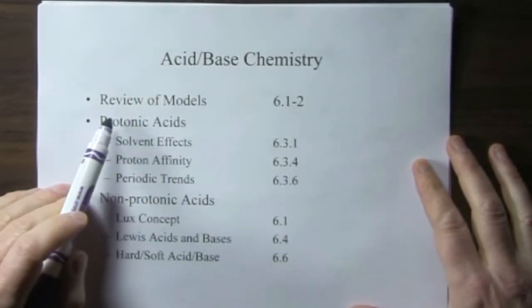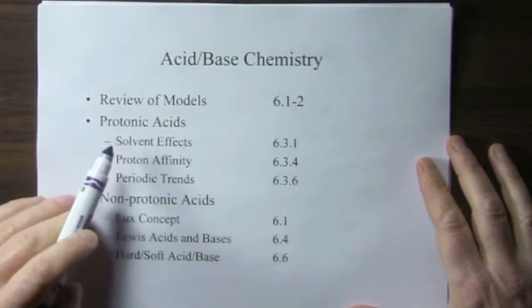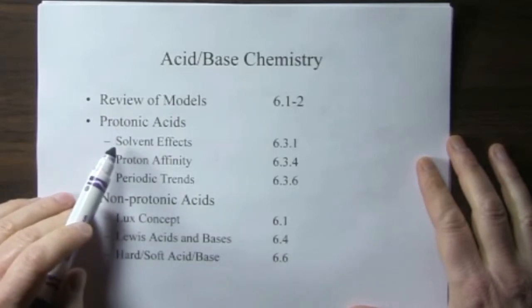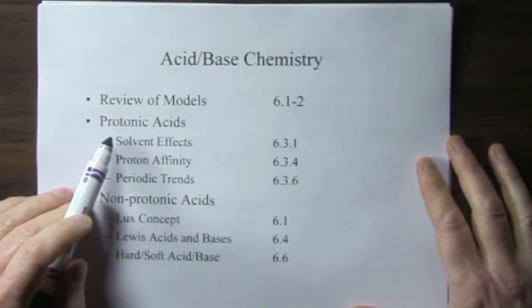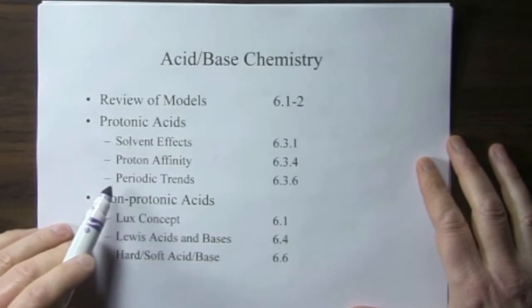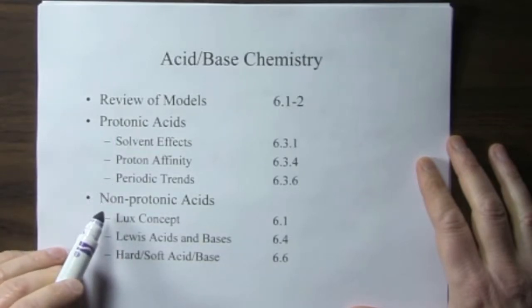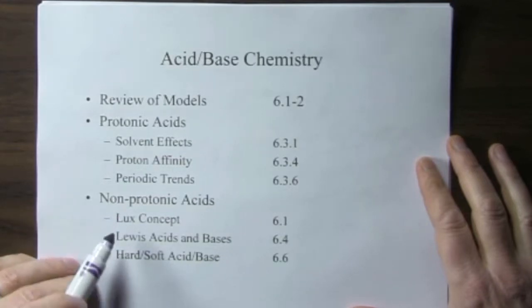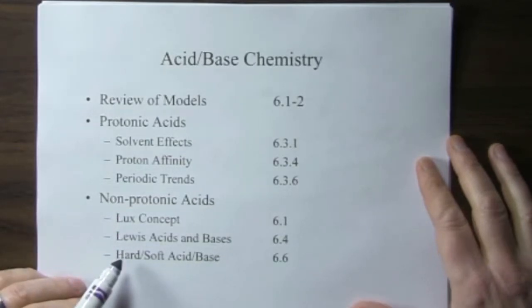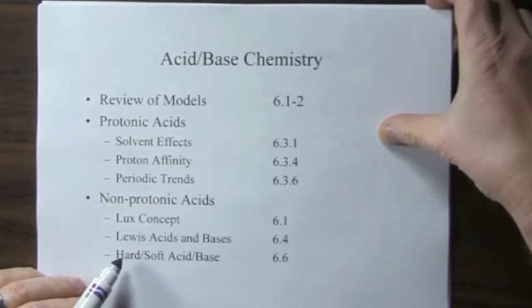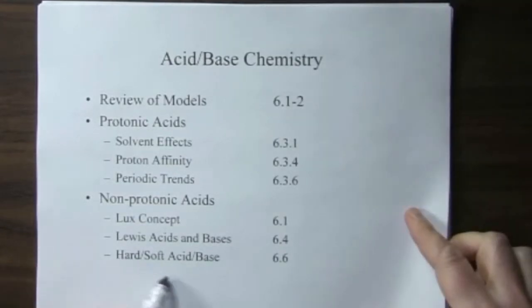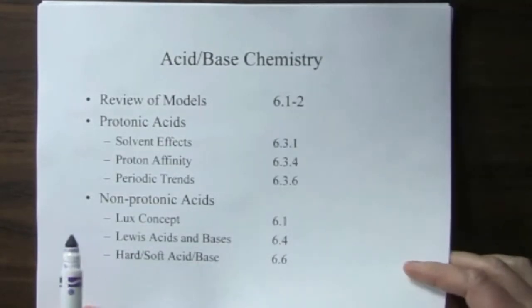Acids and bases that we've learned from general chemistry, and look at how to measure the strength of protonic acids. In our second part, we'll look at non-protonic acids and other definitions of acids and bases and relate acid-base strength to molecular orbital theory.